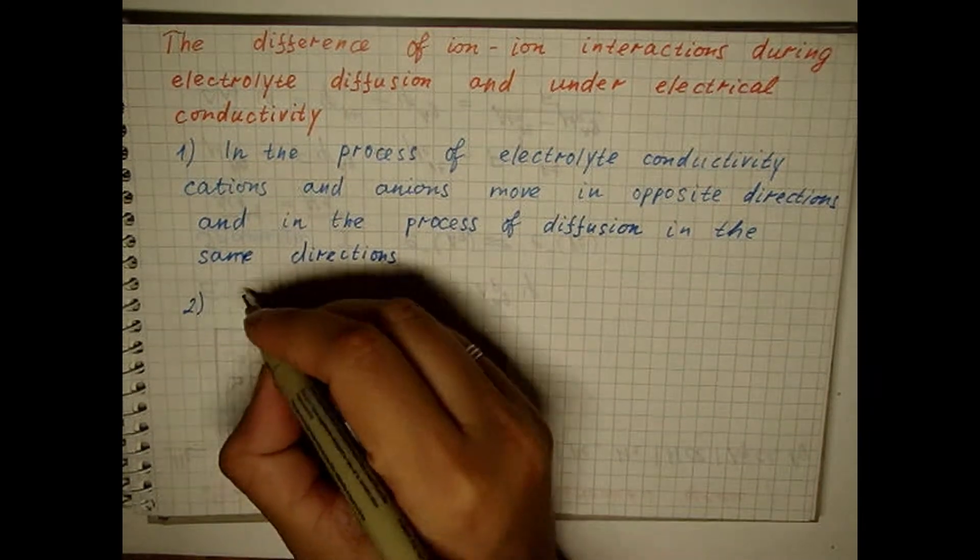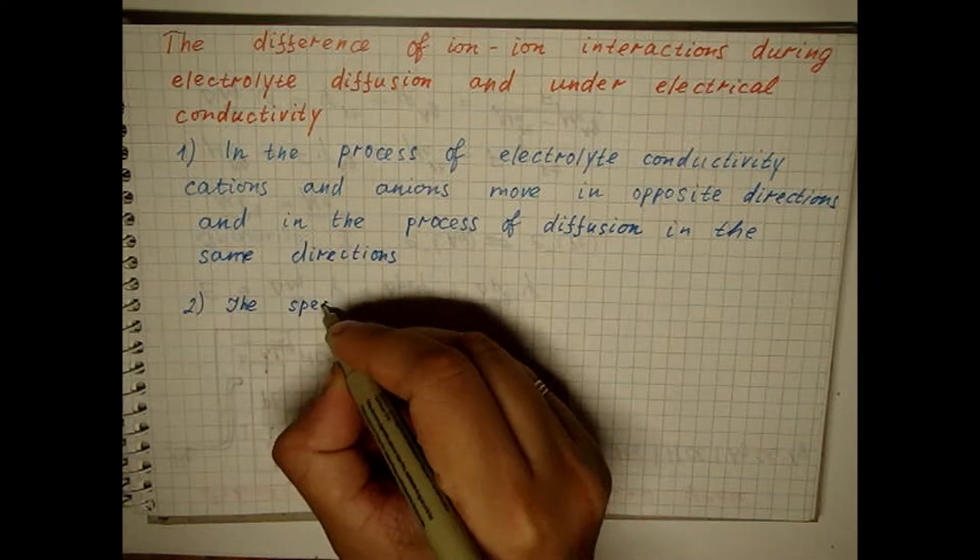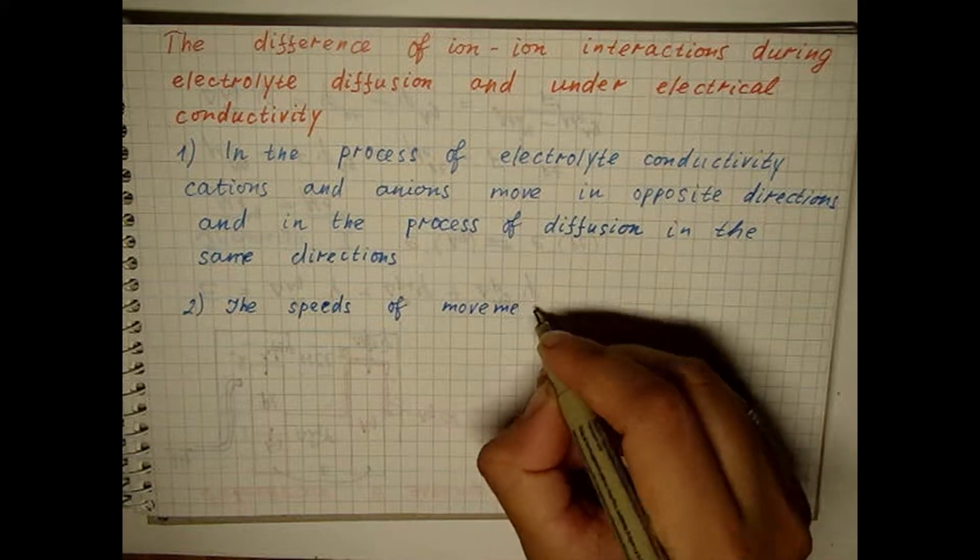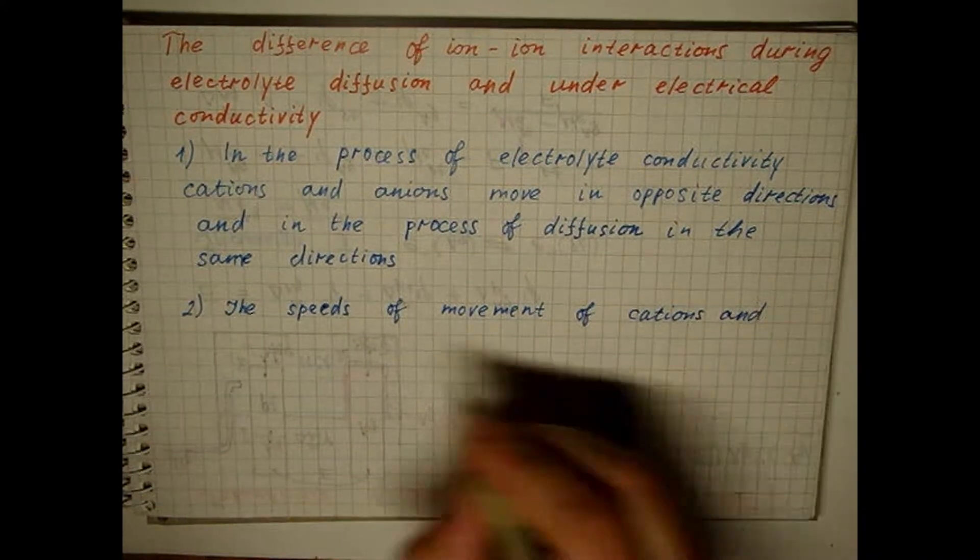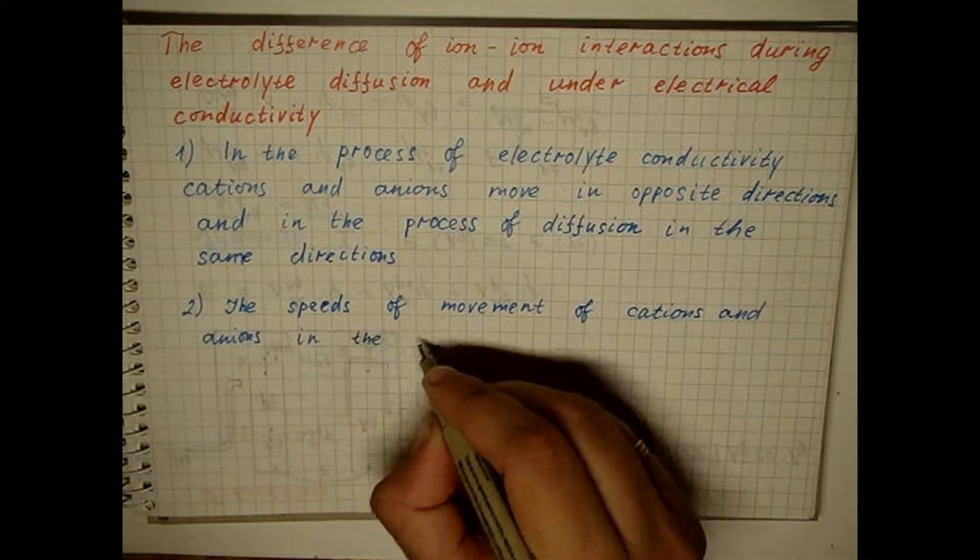The speeds of cations and anions movement in the process of electrical conductivity are different. And in the process of diffusion of the electrolyte after the establishment of a stationary state, they are the same.